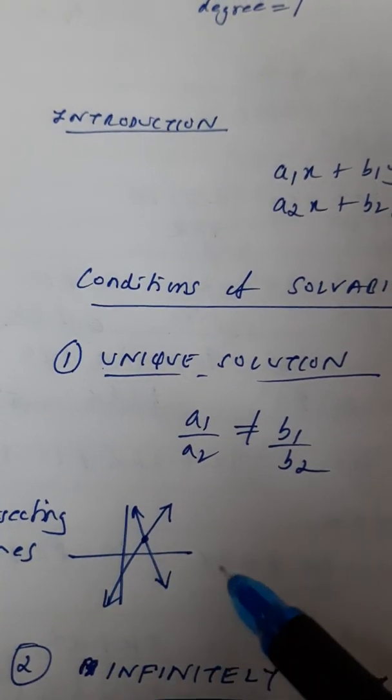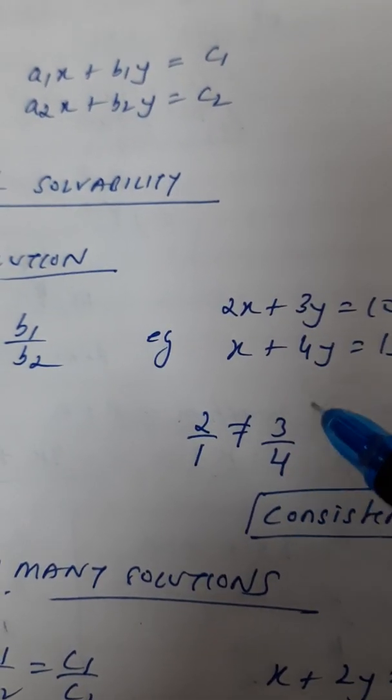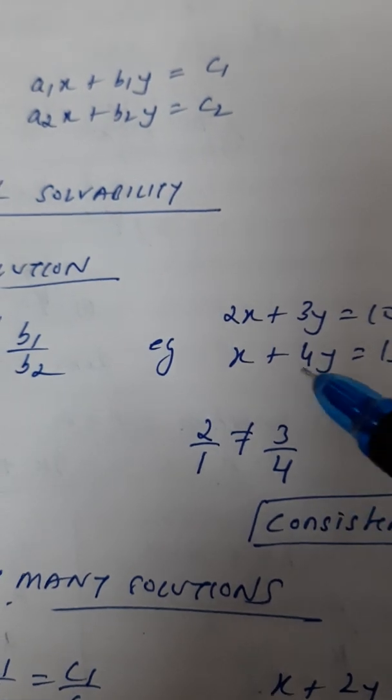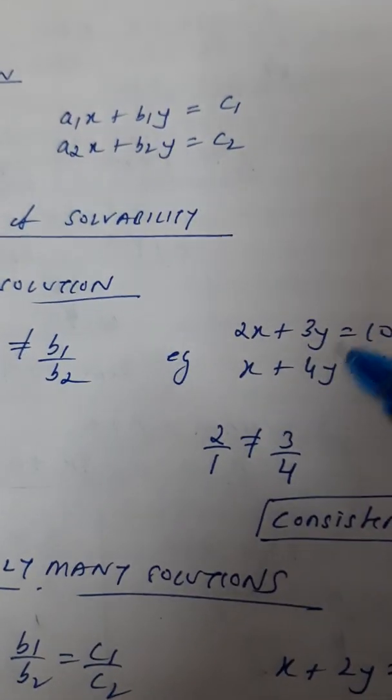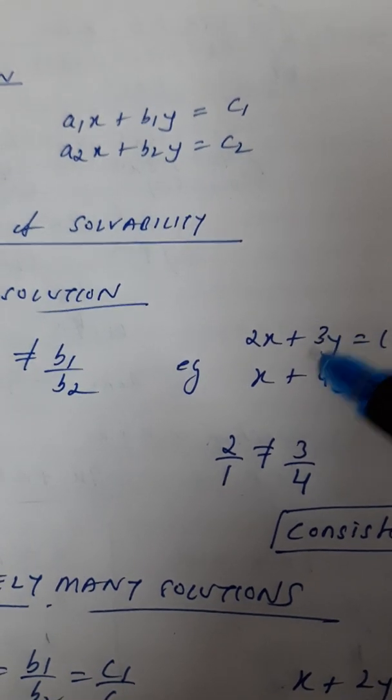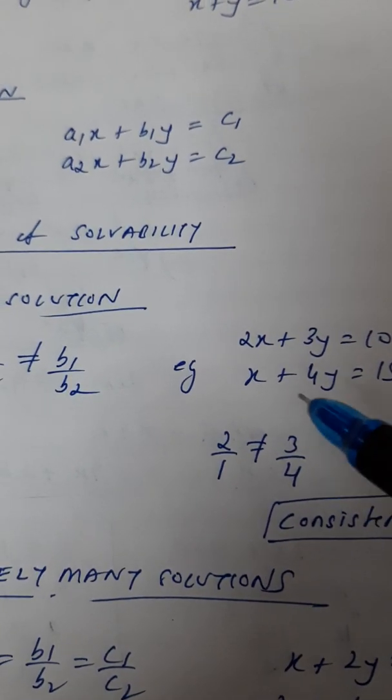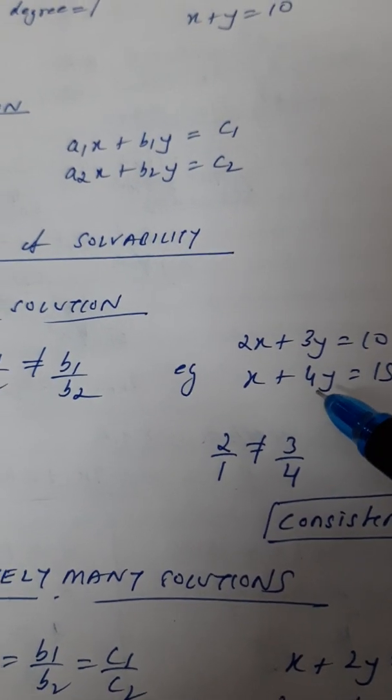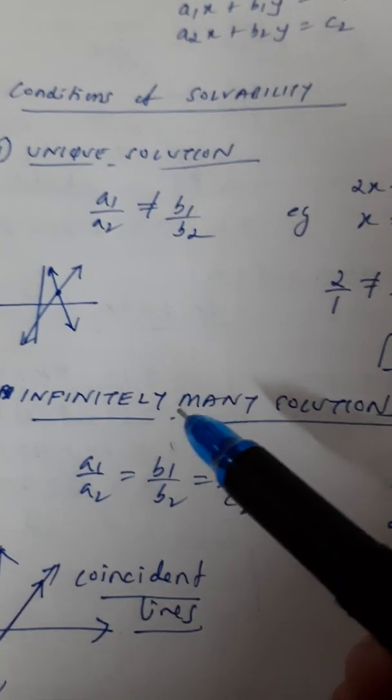Now, how to solve this by graphical method? How to solve this by algebraic method? All this I will explain. So, right now I am just telling you that the equations given could have a unique solution or it could be others. So, this is how we check whether it has a unique solution. I hope it is clear. A1 by A2 should not be equal to B1 by B2.